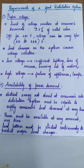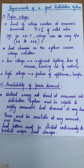Coming to the second requirement — availability of power demand. Since there is no proper storage device on the consumer side, whenever a consumer switches on a fan, mixie, or AC, the distribution system must be in a position to supply the consumer's demand at any amount and at any time, since the load is not constant.